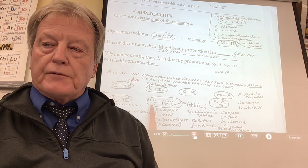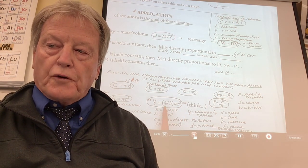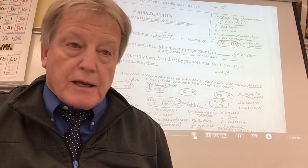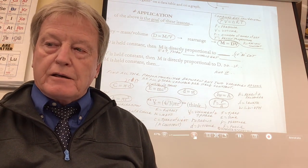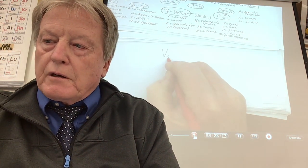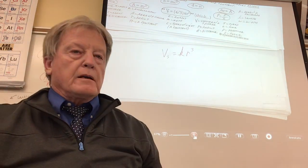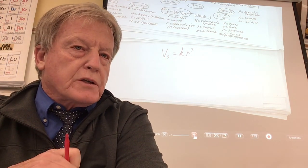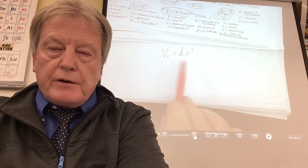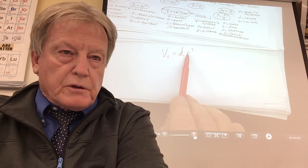The volume of a sphere, as you probably know, is four-thirds pi r cubed. What is four-thirds? It's always the same — it's a constant. And what is pi? It's a constant. A constant times a constant is another constant. So you can rewrite this as: volume equals a constant times r cubed. That fits one of the patterns — it's a direct cube proportionality. Volume is directly proportional to the cube of the radius. Just like direct square, a direct cube proportionality increases a little faster but still fits the same pattern.